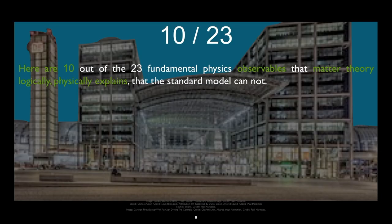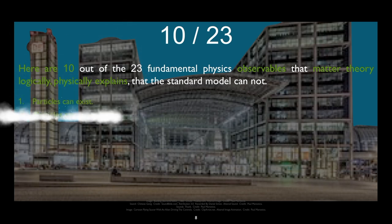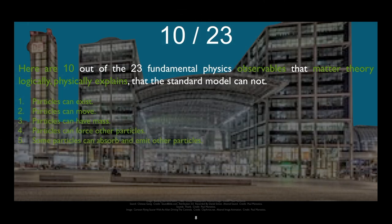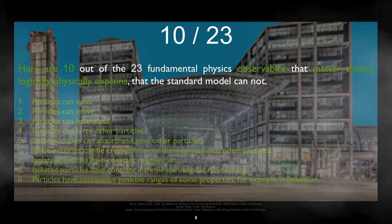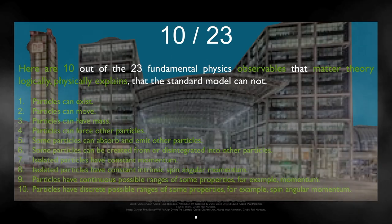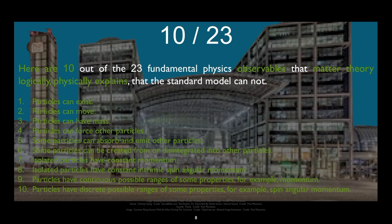Here are 10 out of the 23 fundamental physics observables that matter theory logically physically explains that the standard model cannot: Particles can exist. Particles can move. Particles can have mass. Particles can force other particles. Some particles can absorb and emit other particles. Some particles can be created from or disintegrated into other particles. Isolated particles have constant momentum. Isolated particles have constant intrinsic spin angular momentum. Particles have continuous possible ranges of some properties, for example momentum. Particles have discrete possible ranges of some properties, for example spin angular momentum.